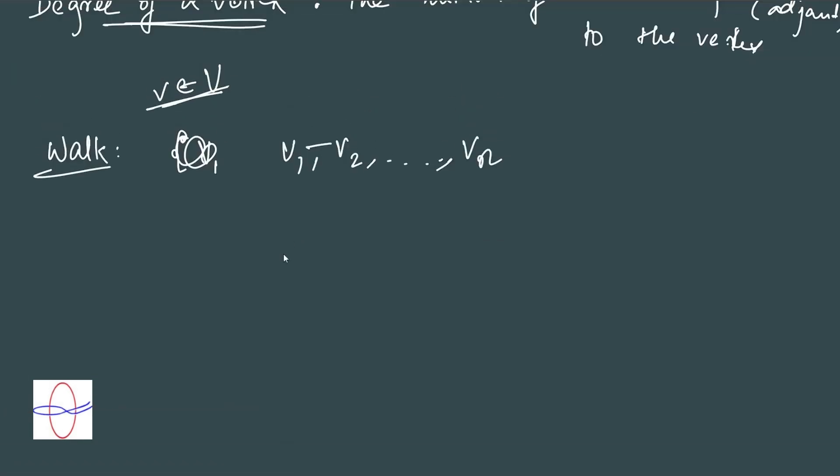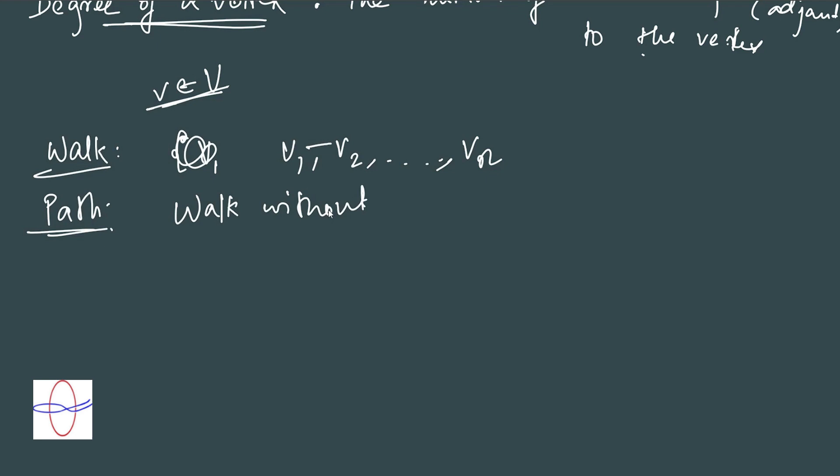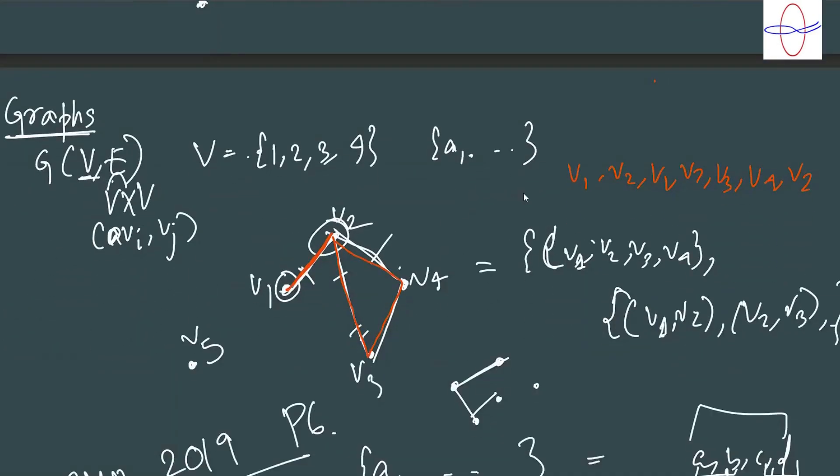A path, on the other hand, is a walk without repeated vertices. So vertices cannot repeat. The example we took was not a path. On the other hand, v1, v2, v3 can be a path, or v1, v2, v3, v4 is a path. But v1, v2, v3, v4, v2 - not a path.